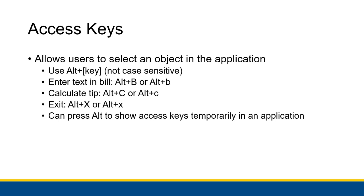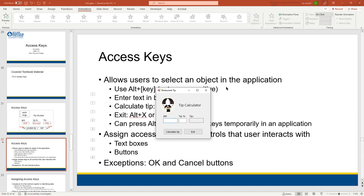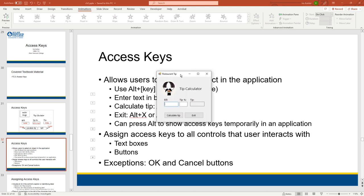You can also press the ALT key by itself — press and release it without pressing another letter — to show all of the access keys temporarily in an application. Here is the tip calculator — the actual completed restaurant tip program. If I want to actually look at the access keys, you can see that no letters are underlined. But if I press the ALT key, all of a sudden there are underlined letters in the different labels: Bill, Tip, Calculate Tip, and Exit.